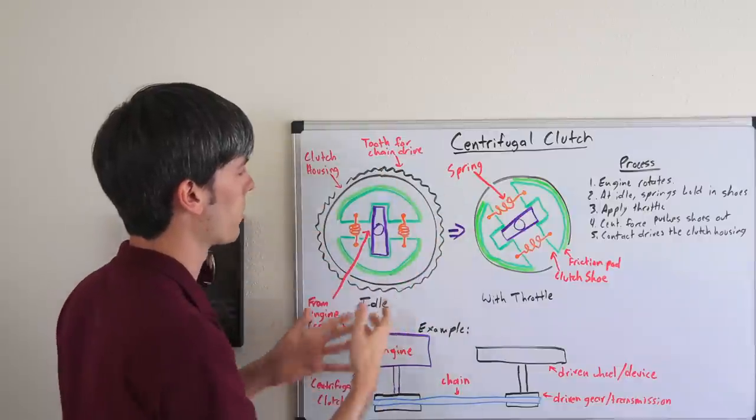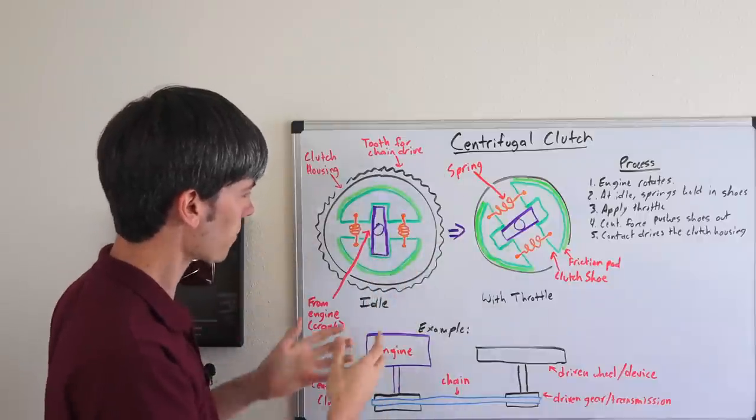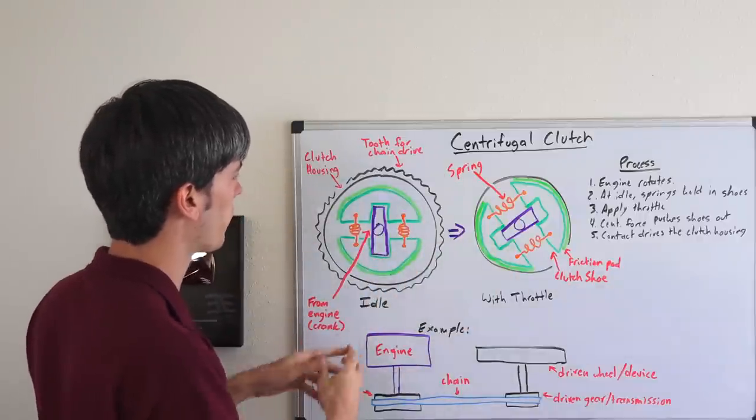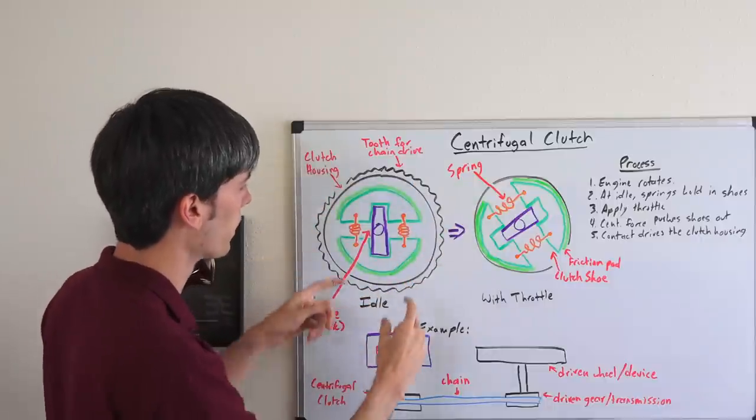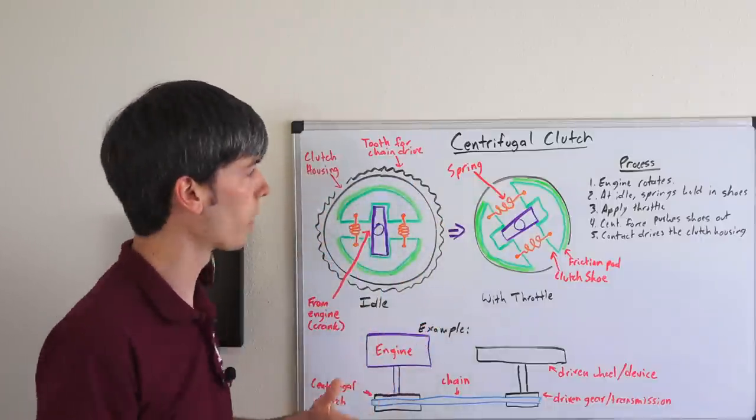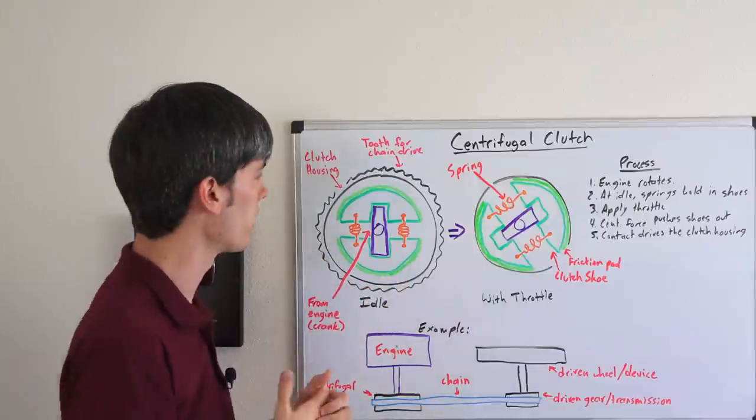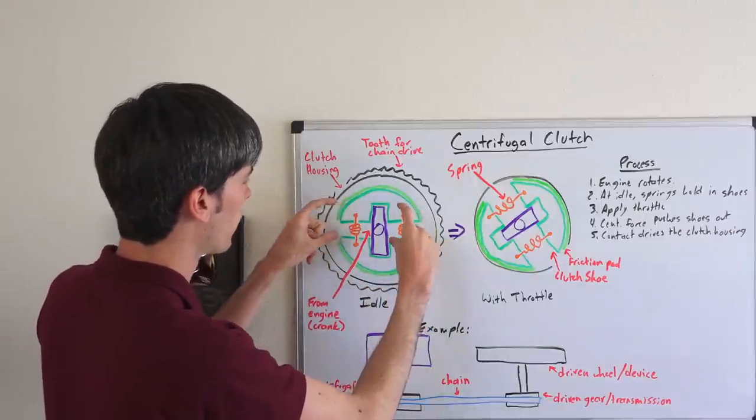So this outer housing is what would be attaching to your transmission or your drive shaft or whatever you're trying to drive. So this is all rotating internally and then this is rotating separately. And so you've got these clutch shoes. On the clutch shoes you've got a friction pad a lot like a drum brake. In fact, these operate very similarly to drum brakes. And then you have these springs which are holding the clutch shoes together.